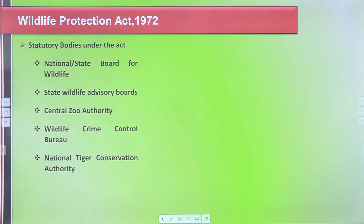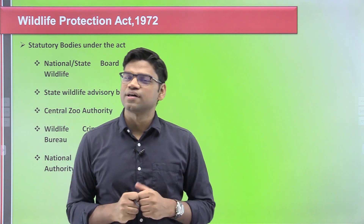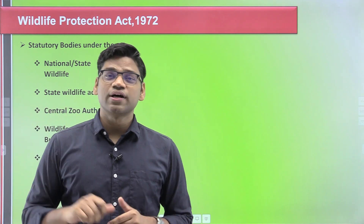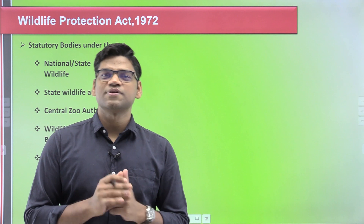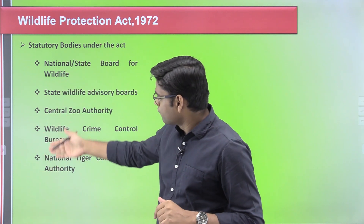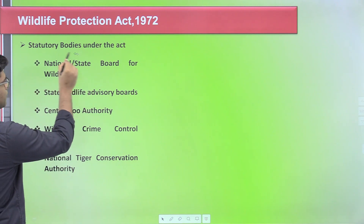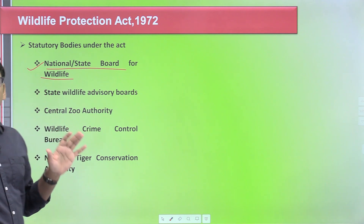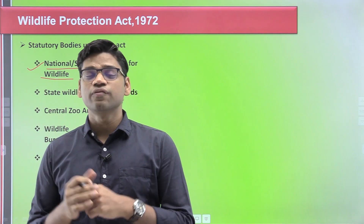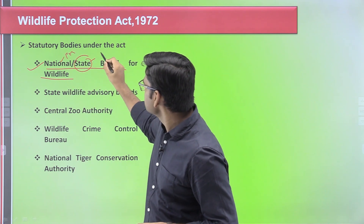There are various statutory bodies established under this particular act, which are very important for UPSC. Generally, UPSC asks whether a body is a statutory body or not, or under which act it is established. You should know which bodies are established by the Wildlife Protection Act. The most important are the National Board of Wildlife and the State Board of Wildlife. These bodies provide for overall management and coordination of conservation, and are chaired at the national level by the Prime Minister of India.